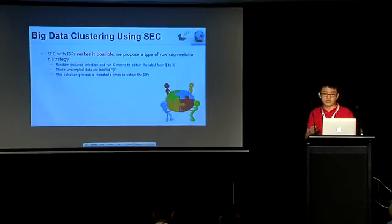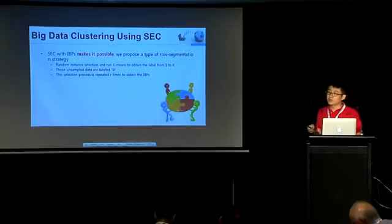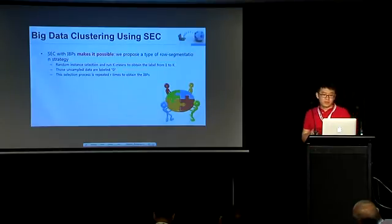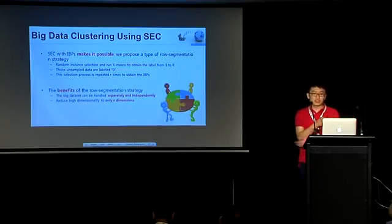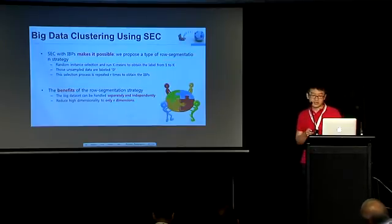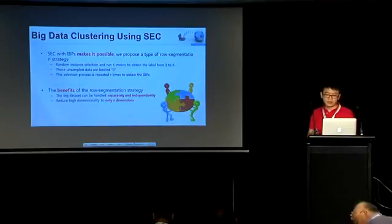It has two steps. First, we randomly select some instances and run k-means to label them from 1 to k. And the second step is to label the unsampled data by zero. By doing so, we can have one incomplete basic partition. And we repeat these two steps r times, we can obtain r incomplete basic partitions. The row segmentation strategy has some benefit. It can handle the big data separately and independently. Moreover, it can represent the high-dimensional data by r-dimensional vectors.